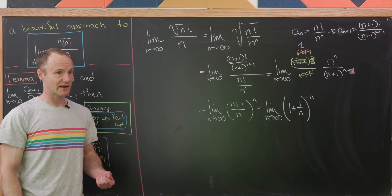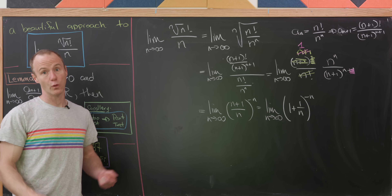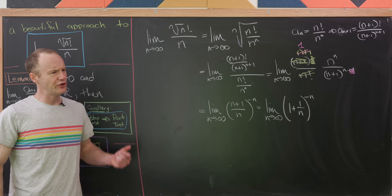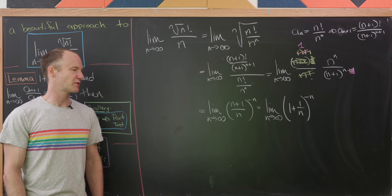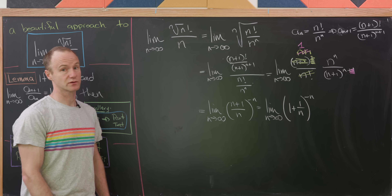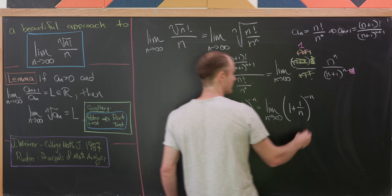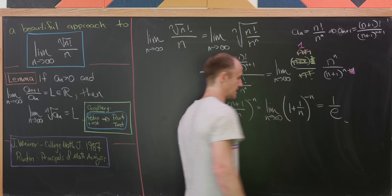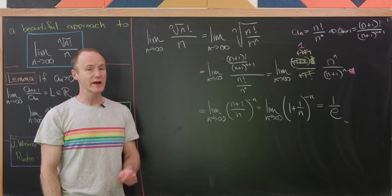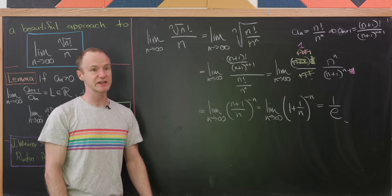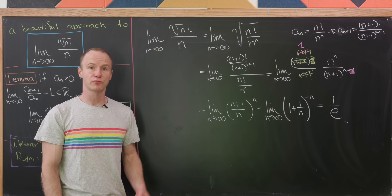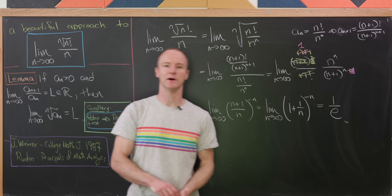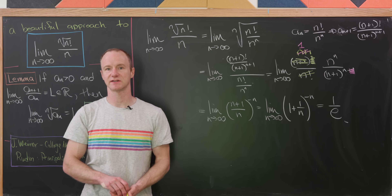Looking at it that way, this has a well-known value. The limit as n goes to infinity of (1 + 1/n)^(−n) equals 1/e — you can derive it with L'Hôpital's rule among other methods. So we've found the value of this fairly tricky limit quite easily using this really nice lemma. And that's a good place to stop.